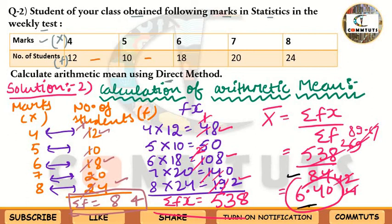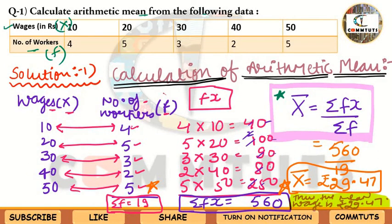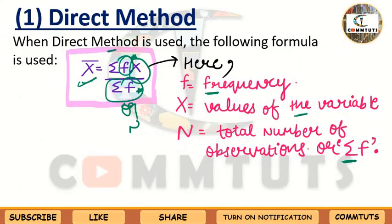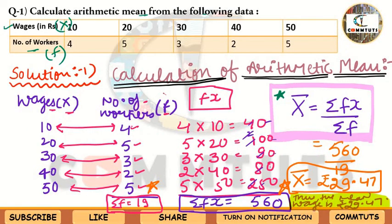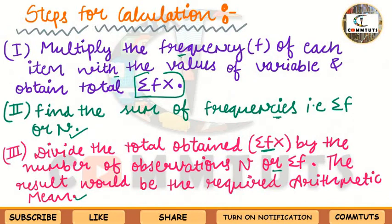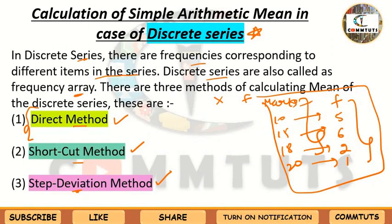This is all about today's session. I hope the calculation of Simple Arithmetic Mean in case of Discrete Series by using the Direct Method is now clear to you. In the next tutorial we will cover the calculation of Simple Arithmetic Mean in case of Discrete Series by using the Shortcut Method.